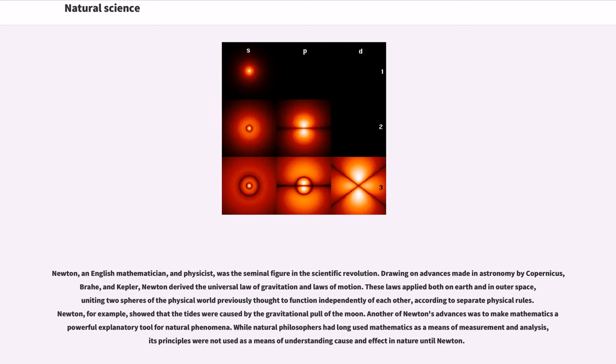Newton, an English mathematician and physicist, was the seminal figure in the scientific revolution. Drawing on advances made in astronomy by Copernicus, Brahe, and Kepler, Newton derived the universal law of gravitation and laws of motion. These laws applied both on earth and in outer space, uniting two spheres of the physical world previously thought to function independently of each other. Newton, for example, showed that the tides were caused by the gravitational pull of the moon. Another of Newton's advances was to make mathematics a powerful explanatory tool for natural phenomena. While natural philosophers had long used mathematics as a means of measurement and analysis, its principles were not used as a means of understanding cause and effect in nature until Newton.